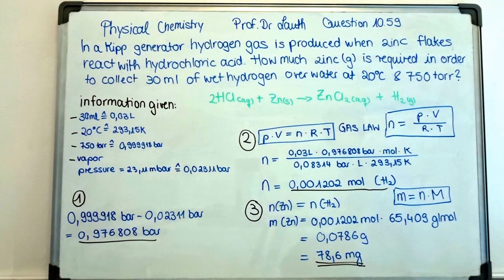We know that in a kip generator, hydrogen gas is produced when zinc flakes react with hydrochloric acid, which is pictured in the equation painted in green.